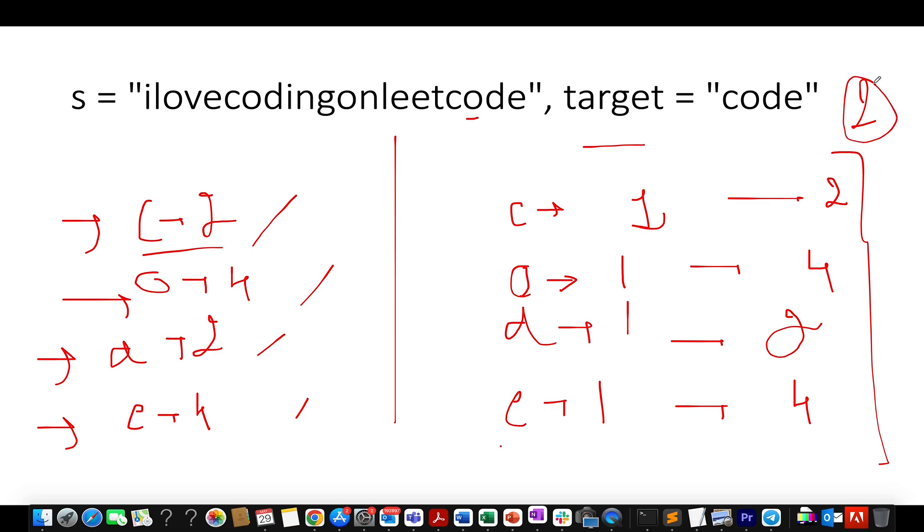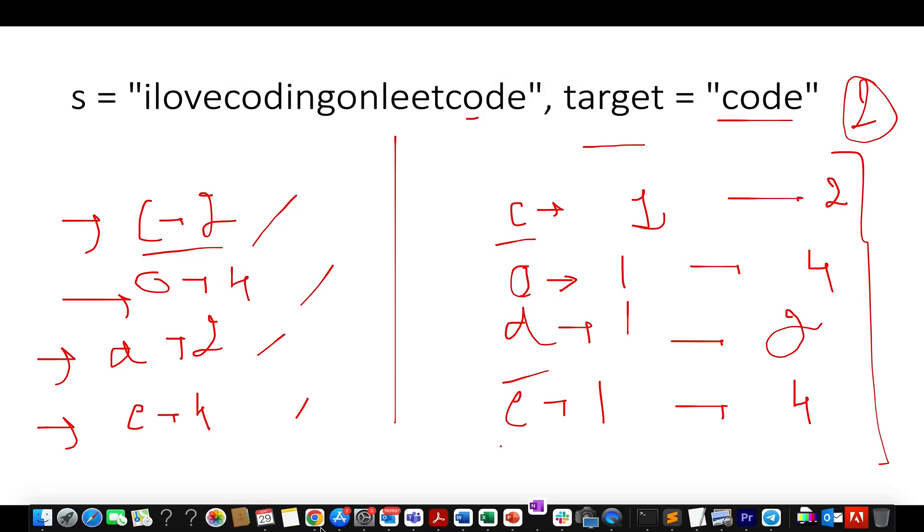So the answer becomes two. The limiting characters are C and D, and this is what we need to identify. So at max, we can only create two instances of string 'code', and I'll exactly follow the same steps. Let's quickly walk through the coding section. It's really simple, guys.